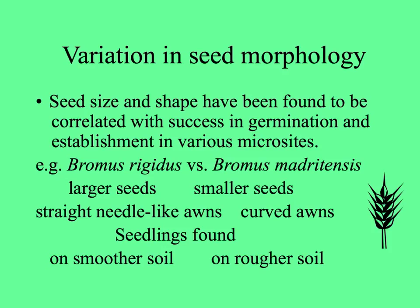brome grasses, Bromus rigidus and Bromus madritensis. Rigidus has larger seeds, madritensis has smaller seeds. Rigidus has straight needle-like awns — these are the things that stick out like little bracts in the grass infructescence. Bromus madritensis awns are curled.